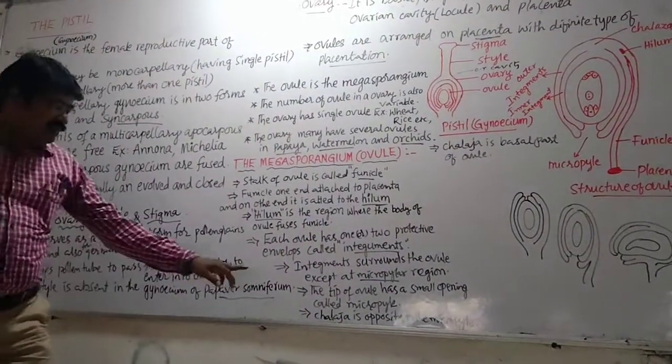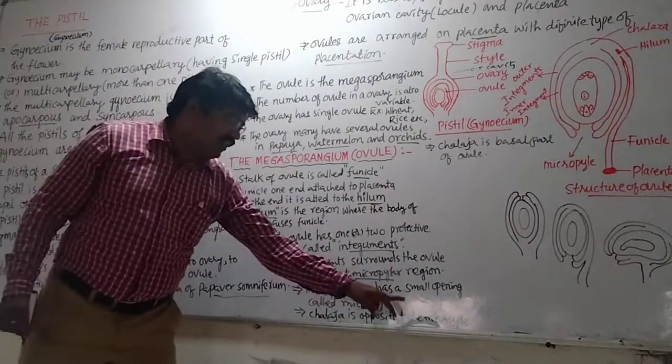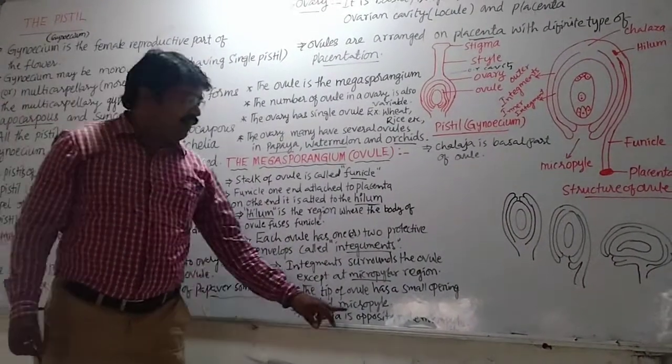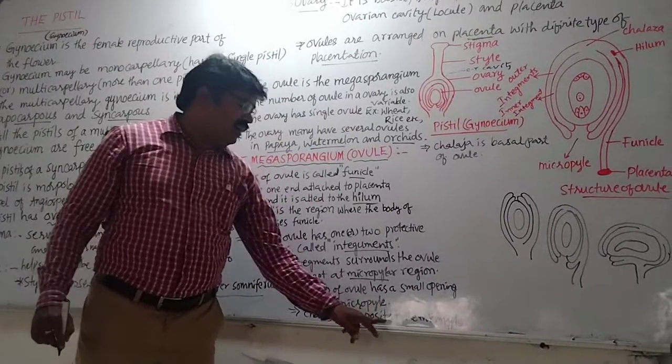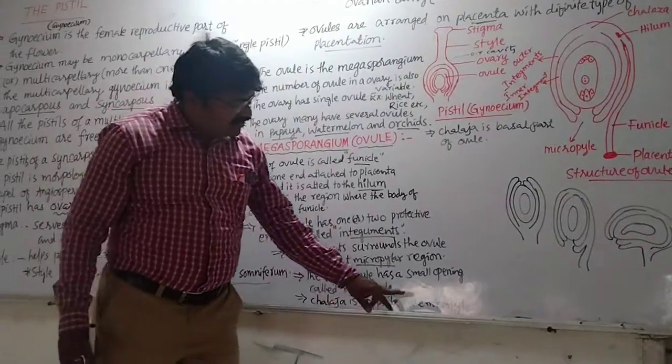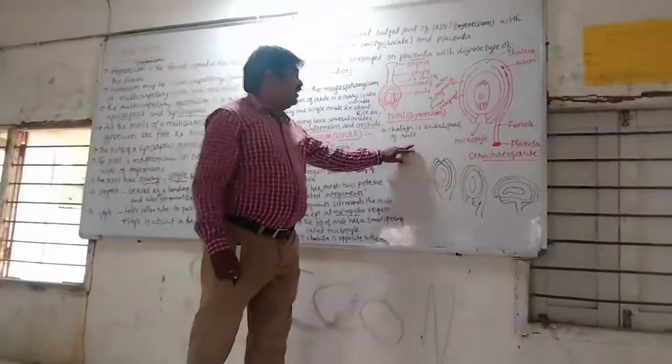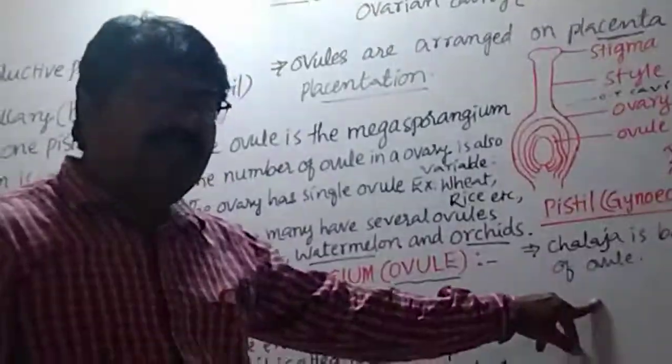And also the tip of the ovule has a small opening called micropyle. Chalaza is opposite to the micropyle. Chalaza is the basal part of the ovule.